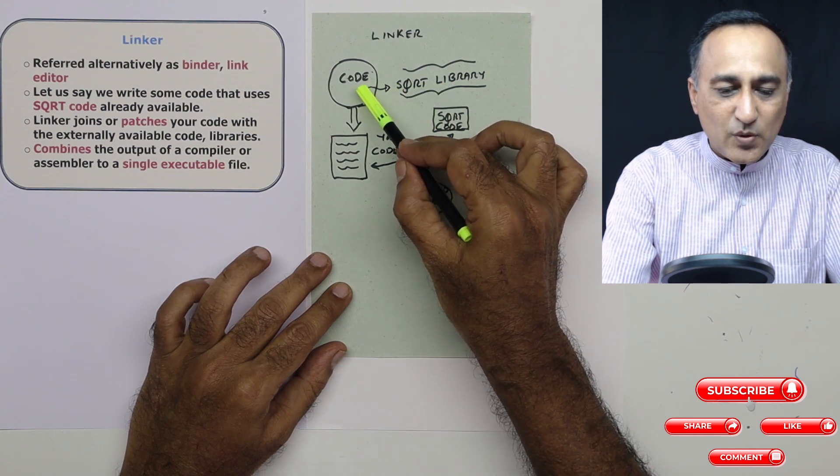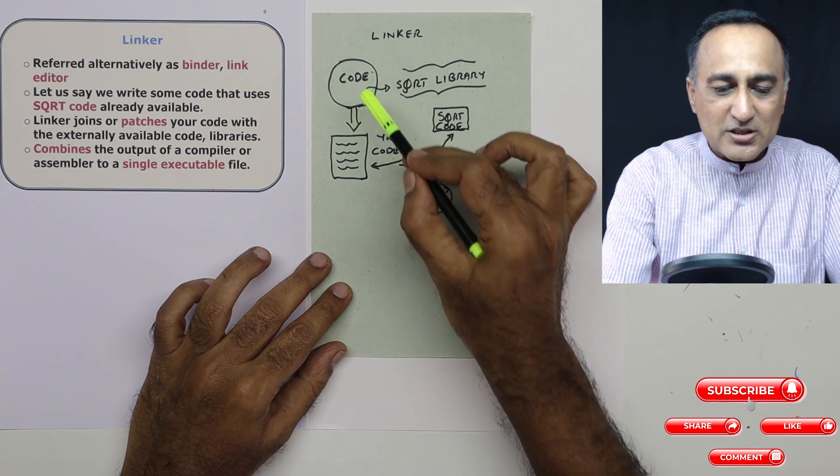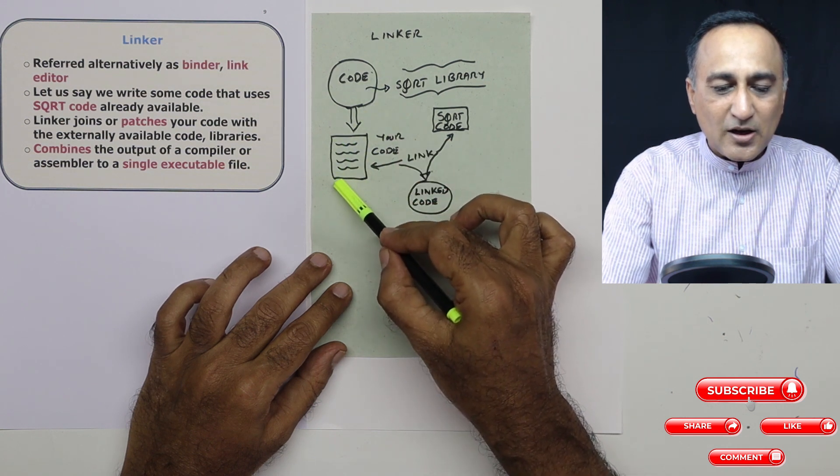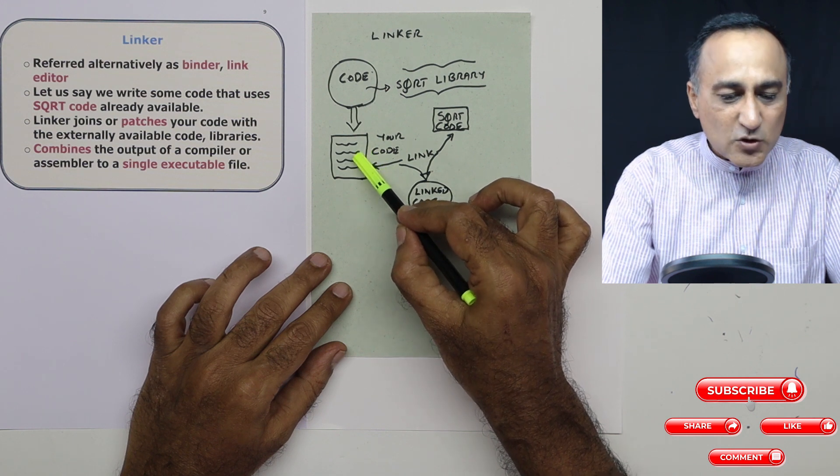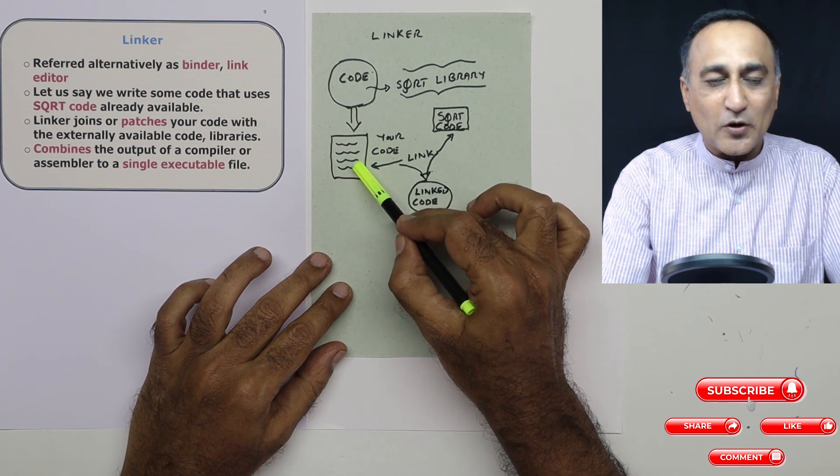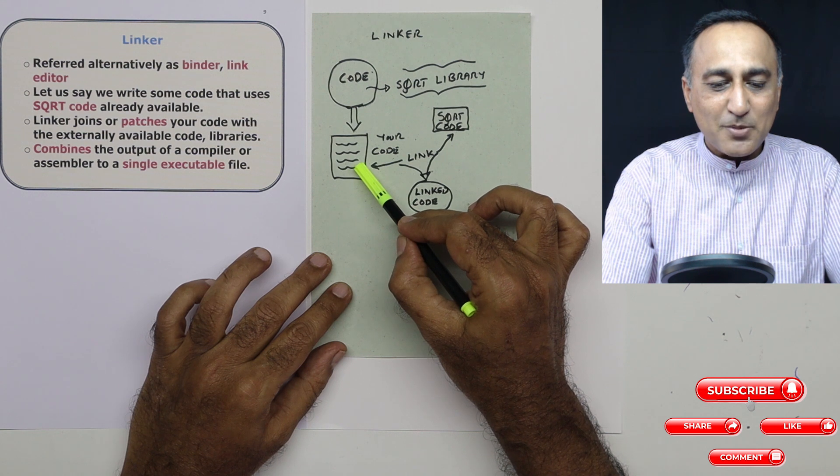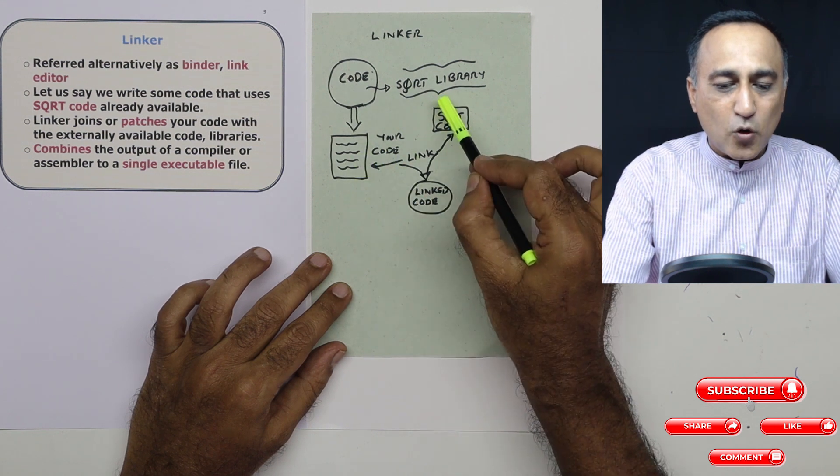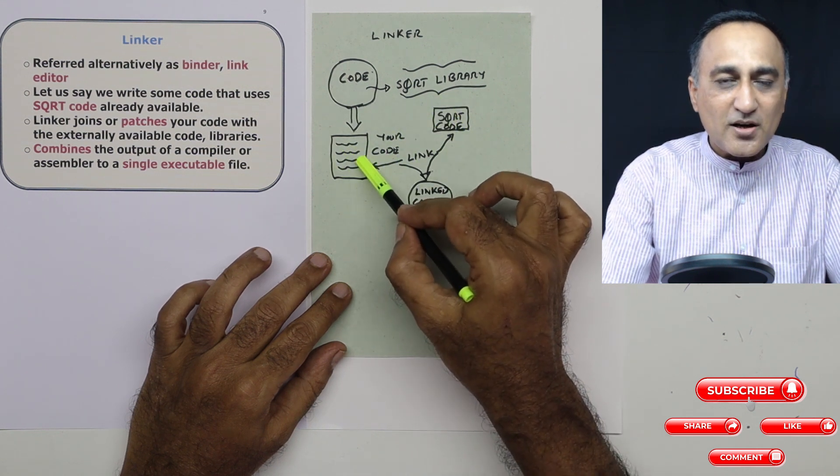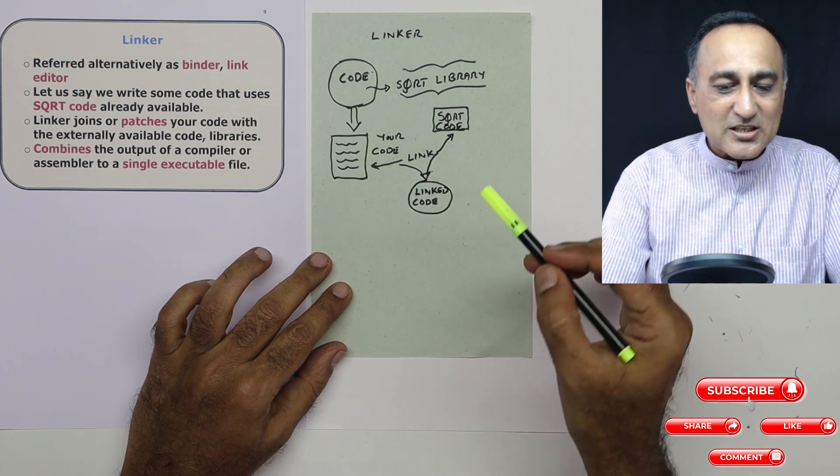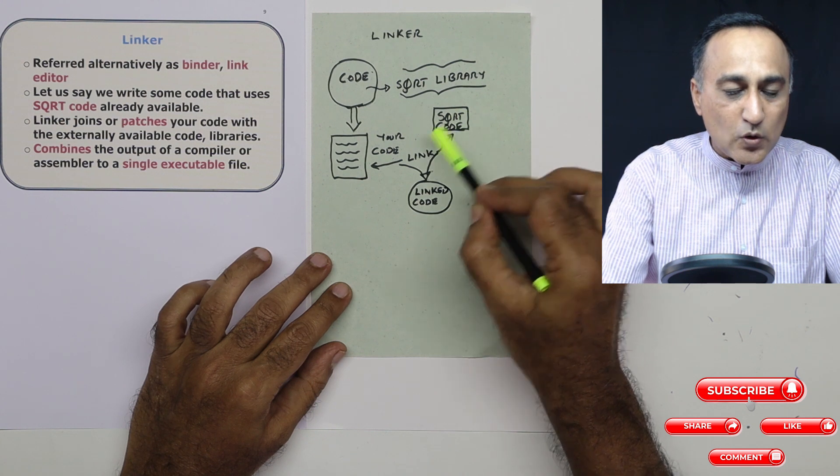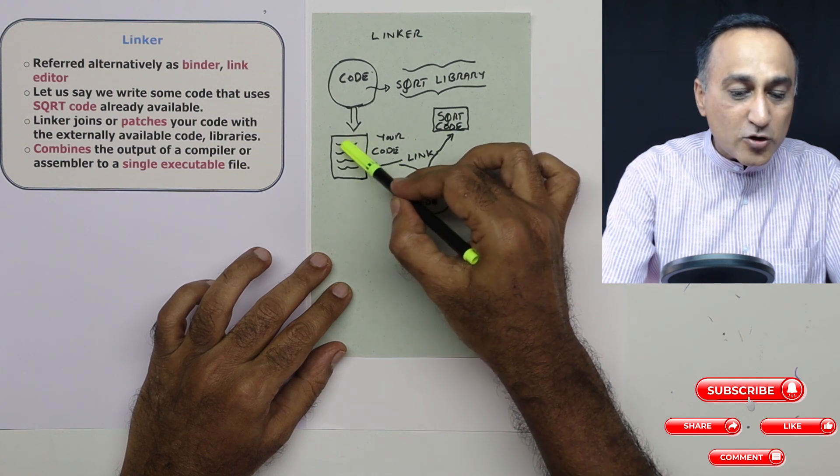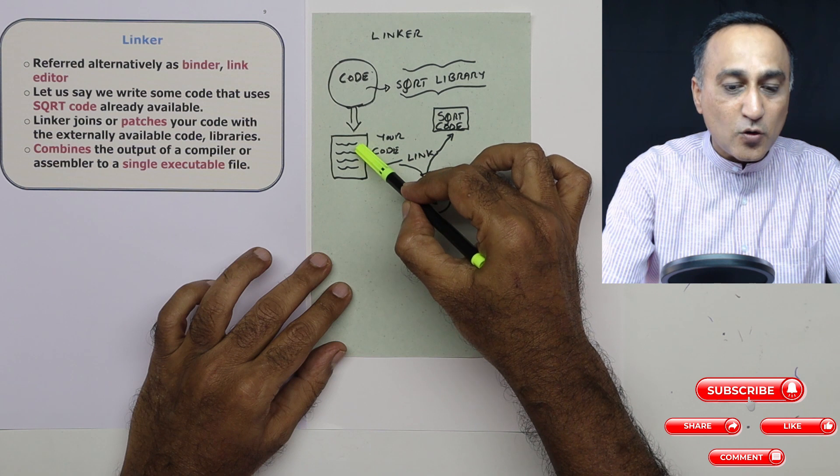So what your compiler will do is it will take your code written in high level language, convert it into a low level language or object code or machine code. Now this code, if you try to run it, is not going to run for a very simple reason because the square root code does not exist in your code. So what happens is from the library, a software called the linker will take the square root code and link it or join it or merge it with your code.